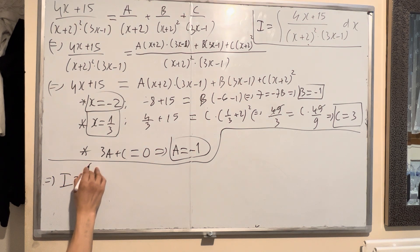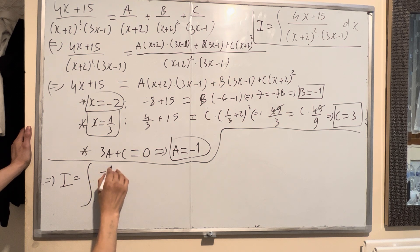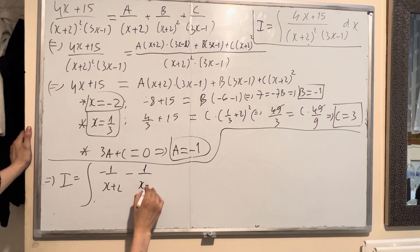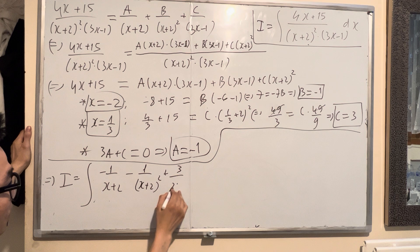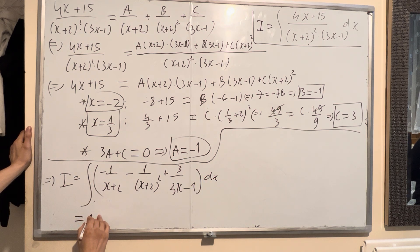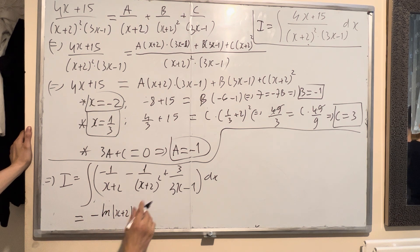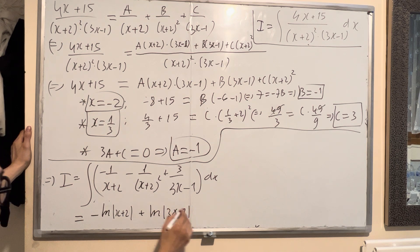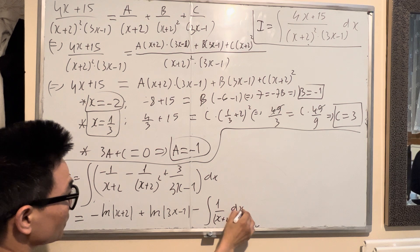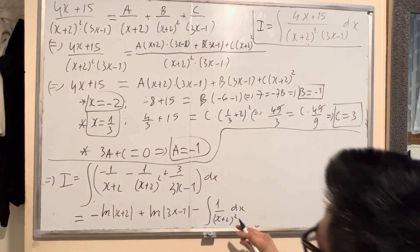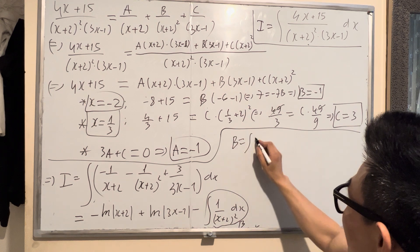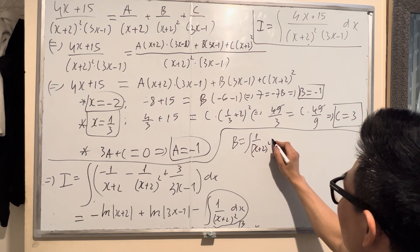Now the integration I equals: integrate negative 1 over x plus 2, minus negative 1 over x plus 2 squared dx. Let's call the second integral part B, so B equals integral of 1 over x plus 2 squared dx.